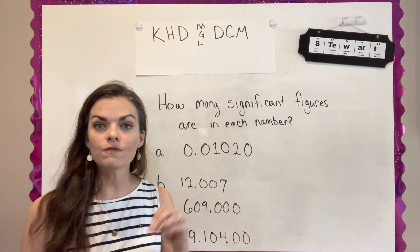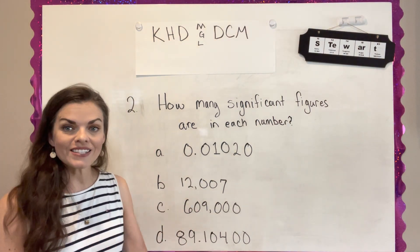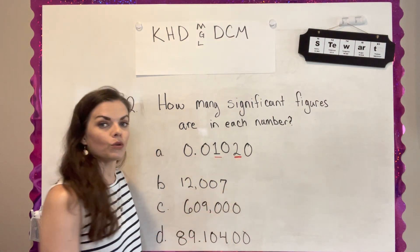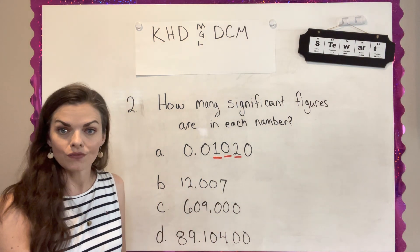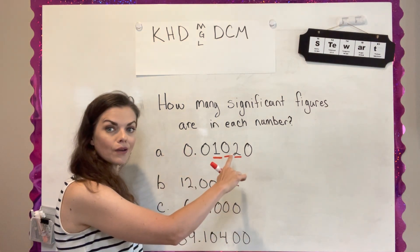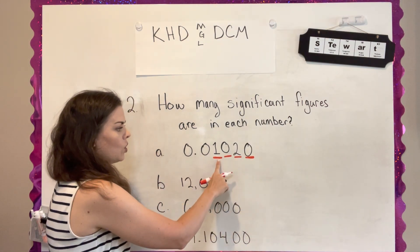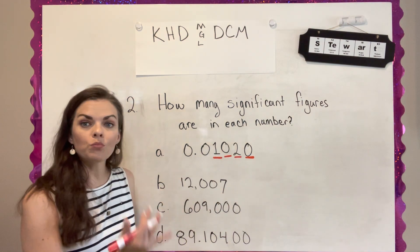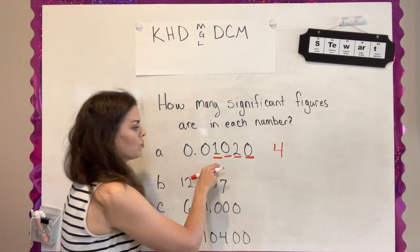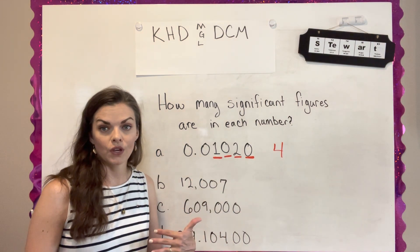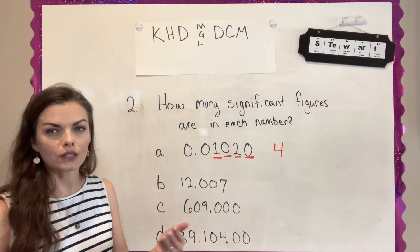Question number two asks you to determine how many figures in each number are significant. For the first one, the non-zero numbers are significant, the zero between two non-zeros is significant, and the zero to the right of the decimal point at the end of the number is also significant. So this number has four significant figures. If you use this number in a calculation with another number that also has four significant figures, you would report your answer with four significant figures. It helps with your calculations and how you round.